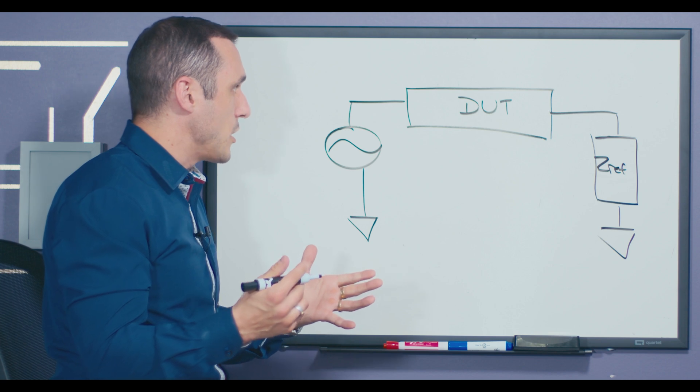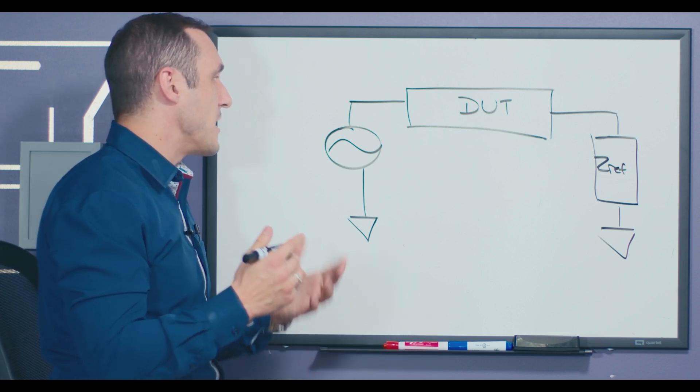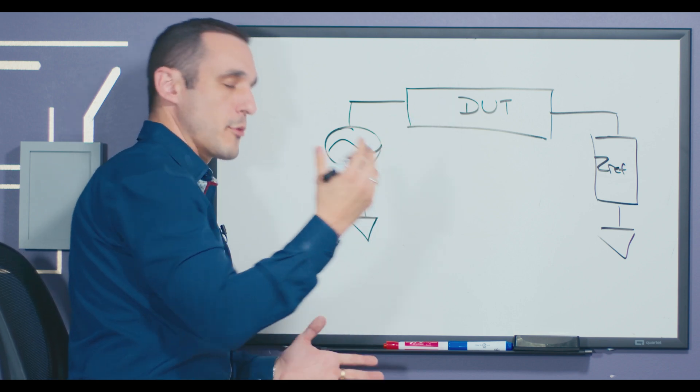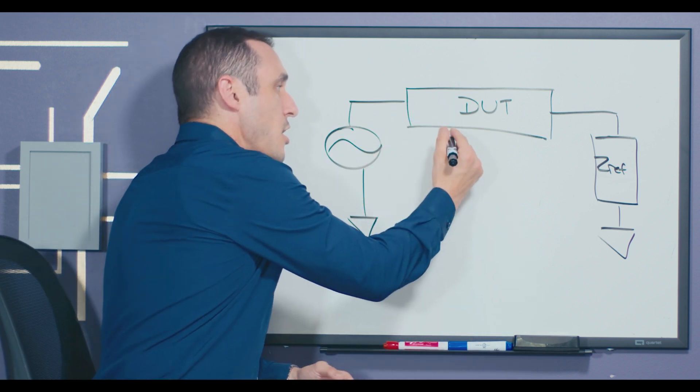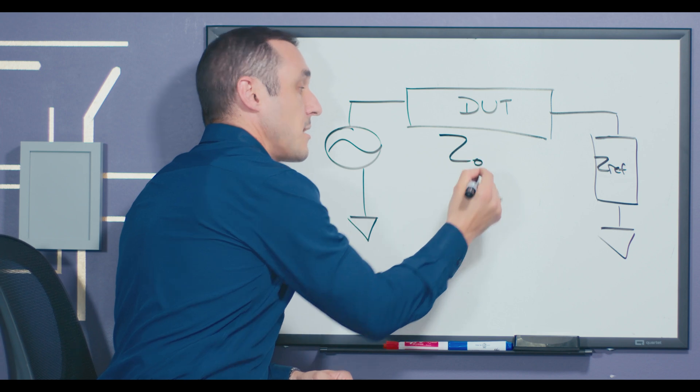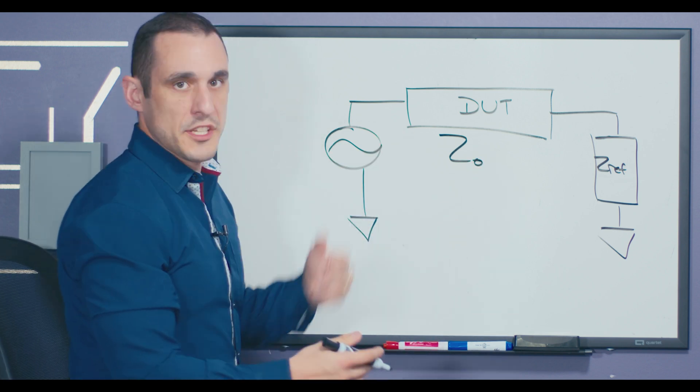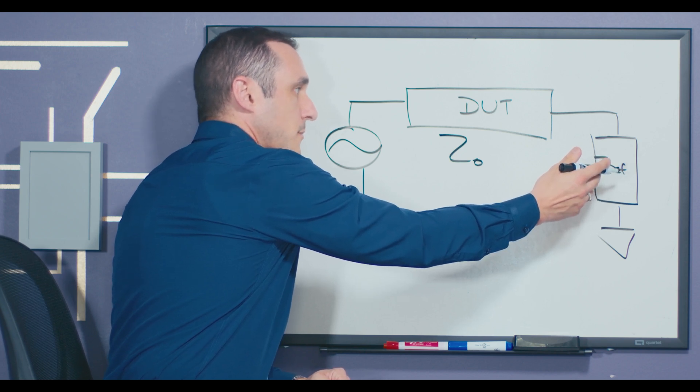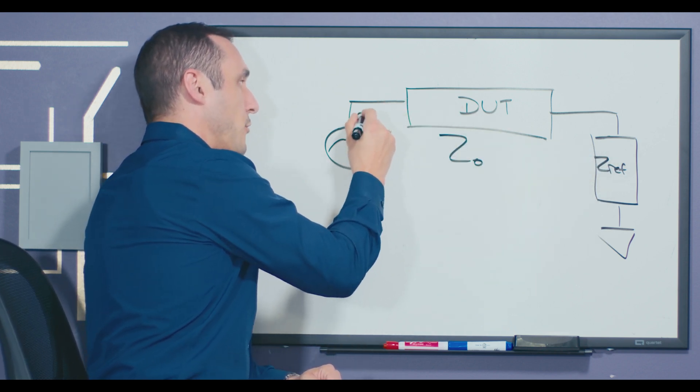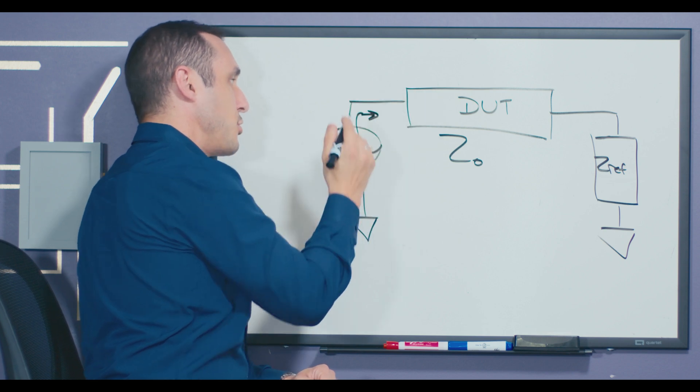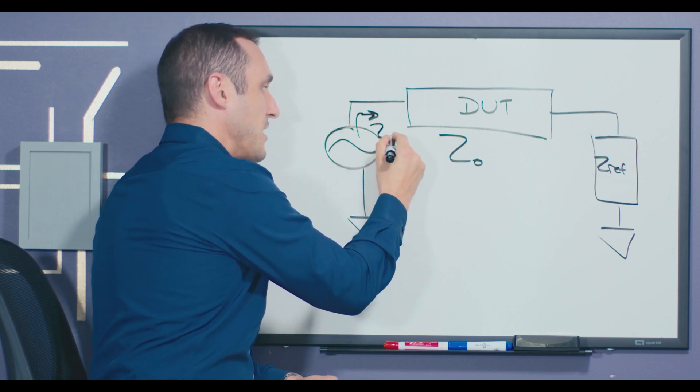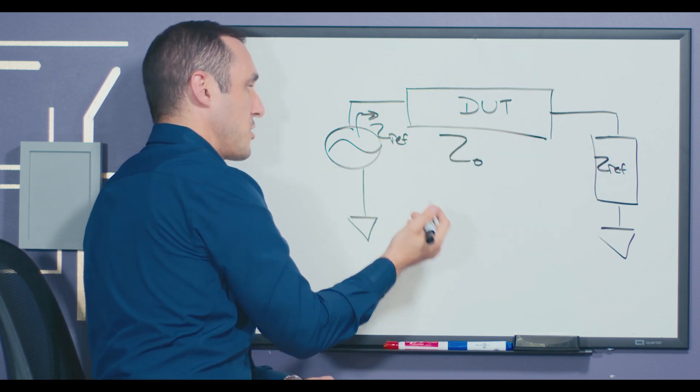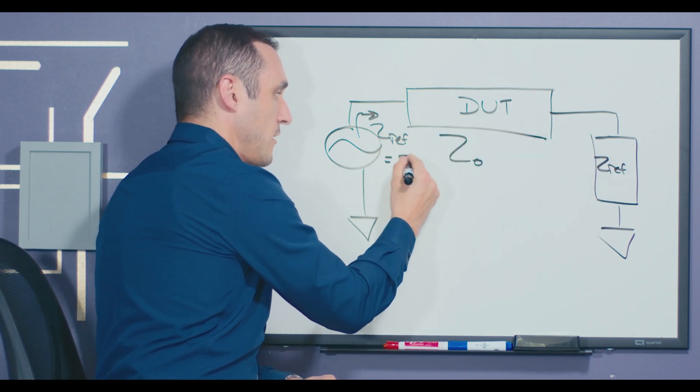So this is the basic topology of a two-port measurement, and what we have here is we have our device under test, remember in this case it is a transmission line, we want to then measure Z sub zero, which is the characteristic impedance of that line, and then we have a reference impedance at our other port, and we also have a reference impedance here looking into the device under test, and it's generally the same value at both ports, so in this case equal to 50 ohms.